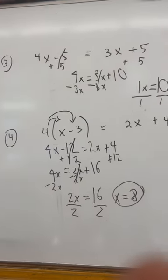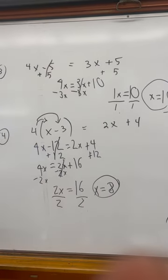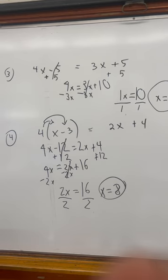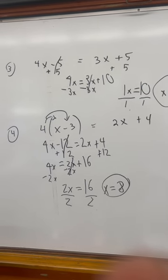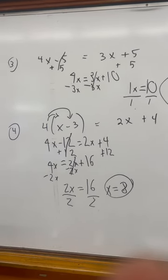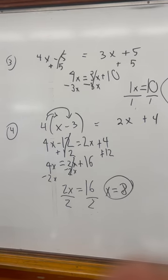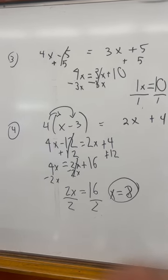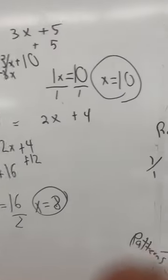And then it gets a little harder when you look at this one: 4x minus 5 equals 3x plus 5, because there are variables on two sides. And then the next one, number 4, you have to distribute, then deal with the variables on both sides, and then do the two-step to get your answer.